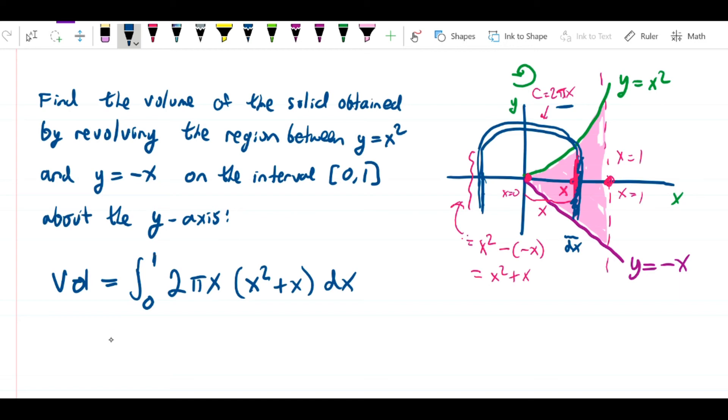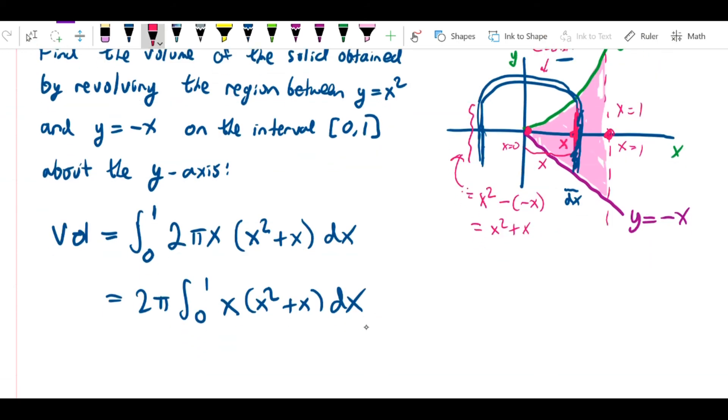We normally are going to write this as 2 pi integral from 0 to 1 of x times x squared plus x dx. So, what we have here is we have the expression for the radius, the expression for the height of a shell, and the expression for the thickness of the shell.